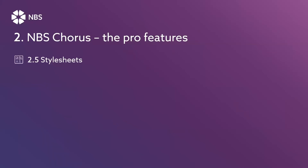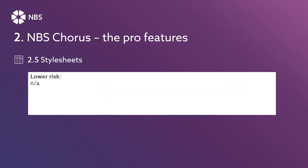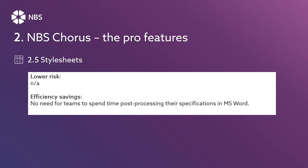Let's have a look at style sheets now. It's in the same sort of field as publication, history and revisions — it's about the output that comes out of Chorus. It's not really one that lowers the risk of things going wrong, but everyone that uses Chorus as a designer wants the specifications to look good, look good alongside the drawings, the same style, the same font. So it'll make your documents look good, and it'll also create efficiencies because you have to do less work post-processing.